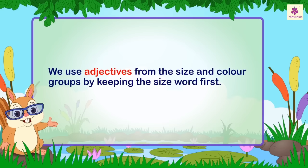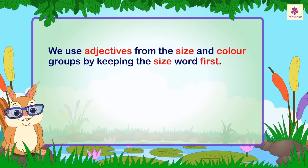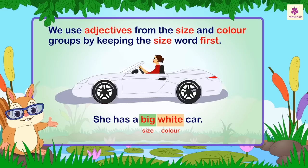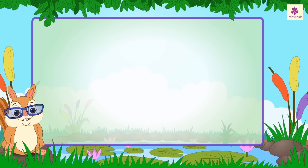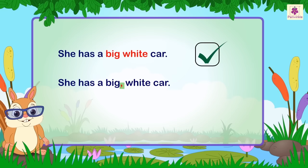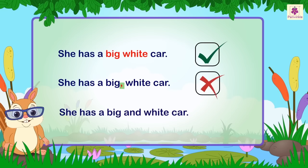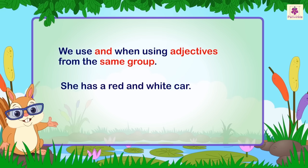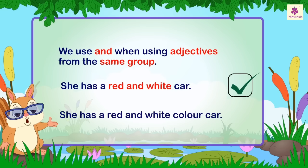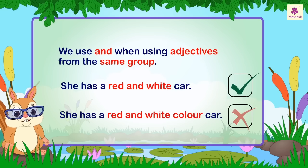We use adjectives from the size and color groups by keeping the size word first. For example: she has a big white car. We do not use a comma or 'and' between the two words — so 'big and white car' is incorrect. However, 'a red and white car' is correct when referring to two distinct colors, while 'a big and white car' remains incorrect.